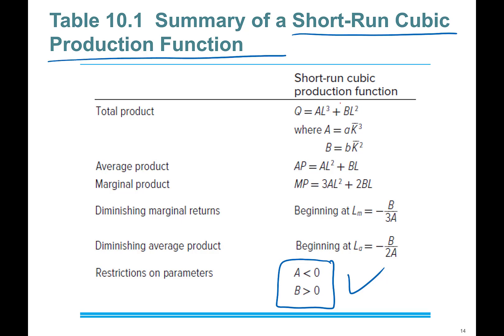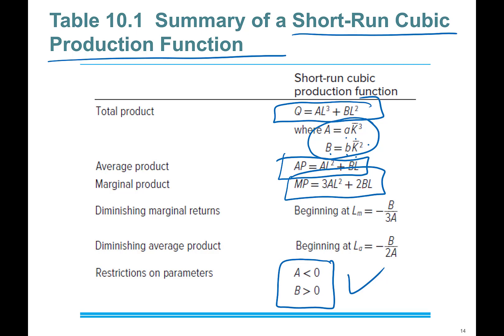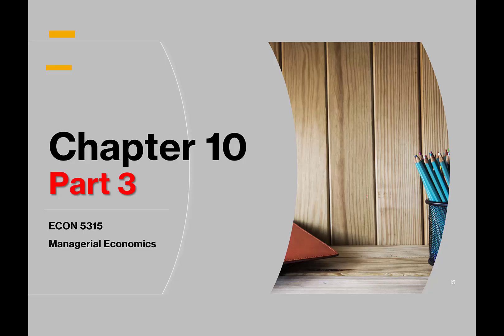Real quick recap: the short-run cubic production function looks like Q = AK̄³ + BK̄²L, where capital A = aK̄³ and capital B = bK̄². Average product is aL² + bL, marginal product is 3aL² + 2bL. Diminishing marginal returns sets in at LM = -b / 3a, and diminishing average product sets in at LA = -b / 2a.